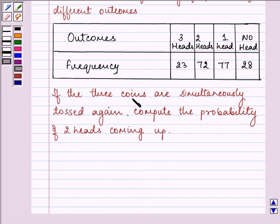If the 3 coins are simultaneously tossed again, compute the probability of 2 heads coming up.